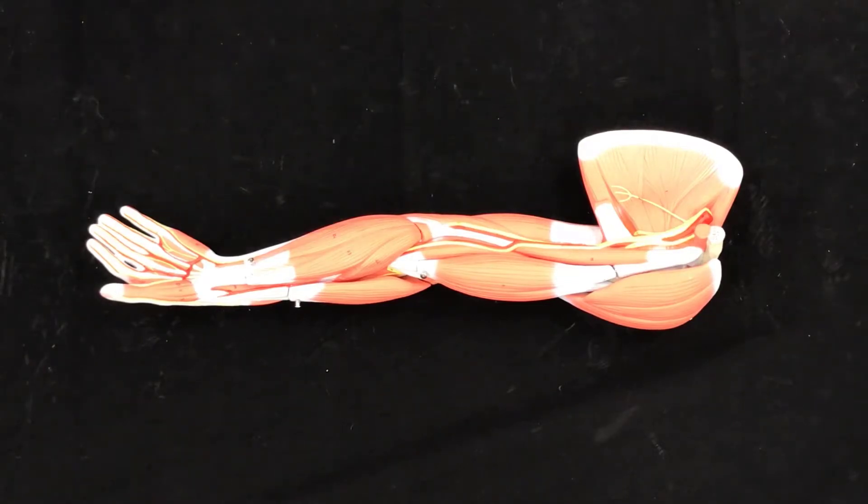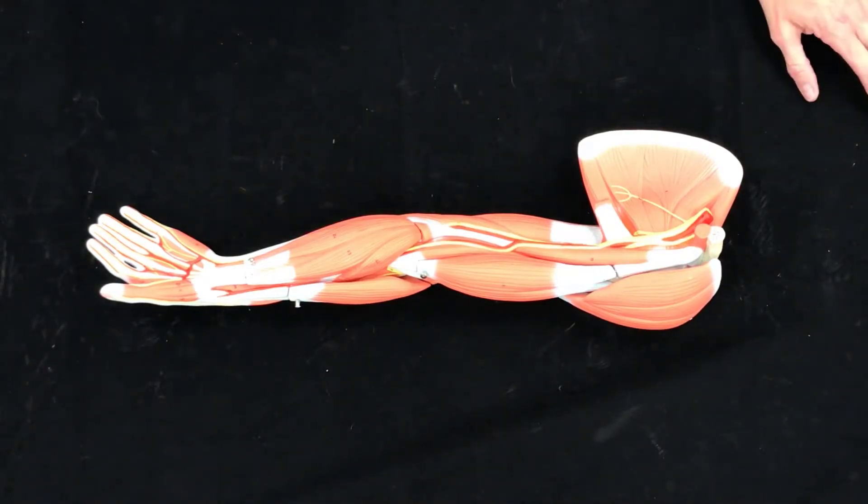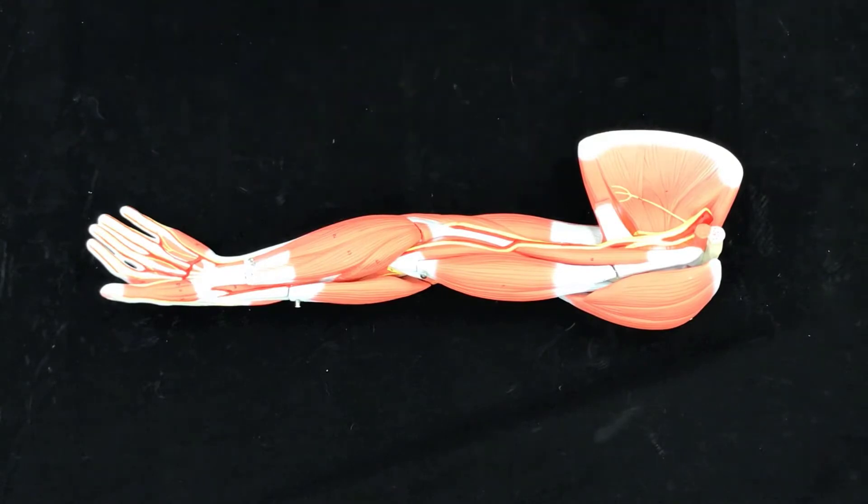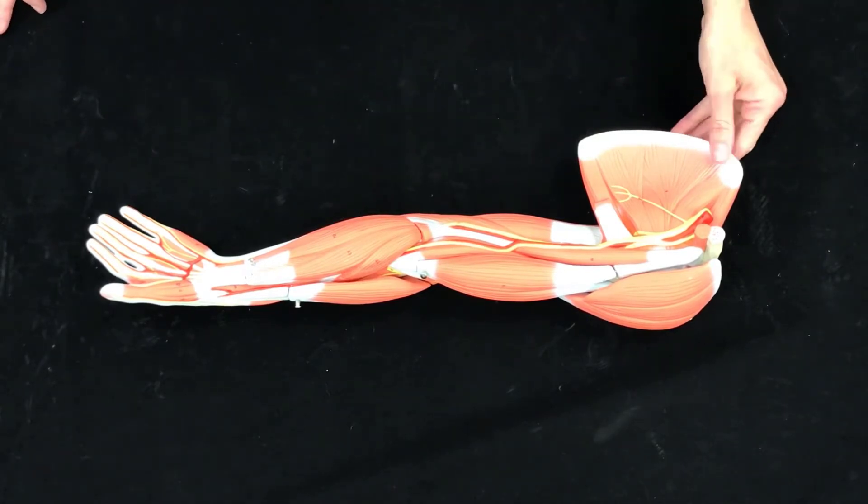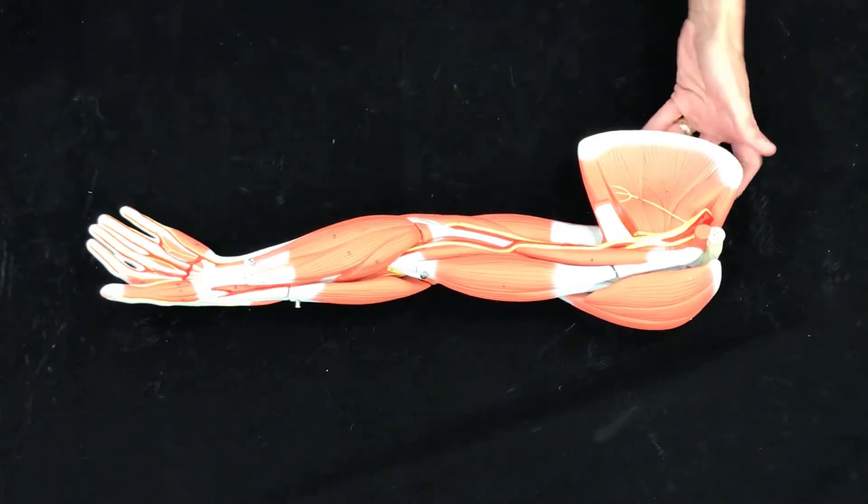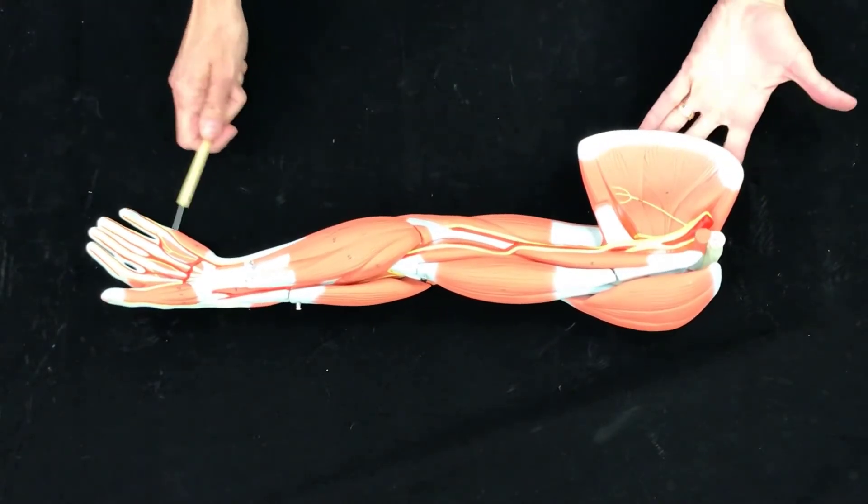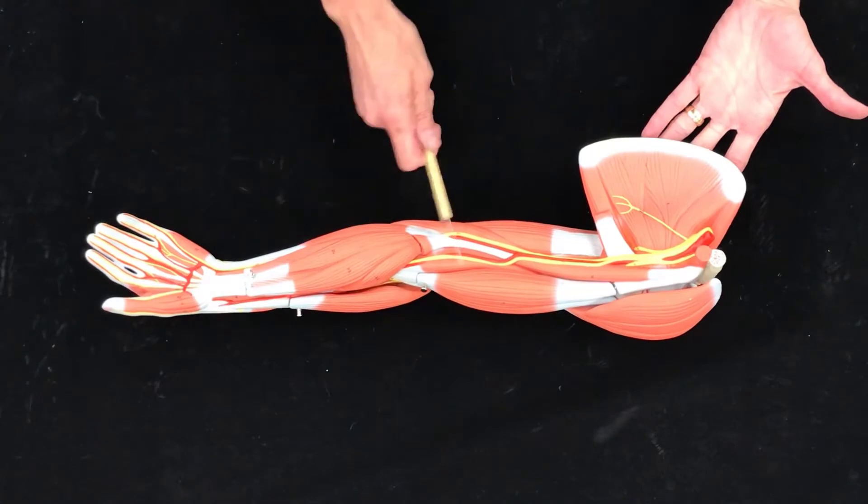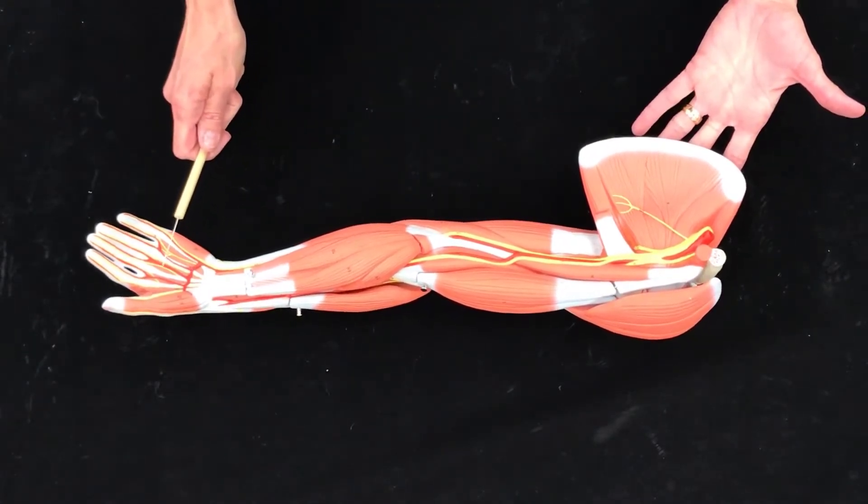All right, now we're going to be going over the surface anatomy for the arm. So we are looking at the left arm, and we can see this is anterior. Think anatomical position.